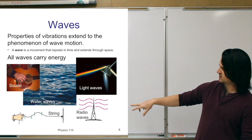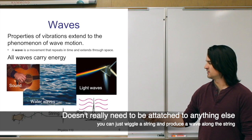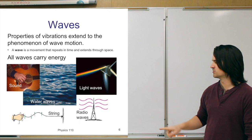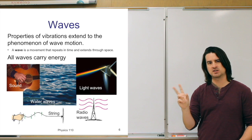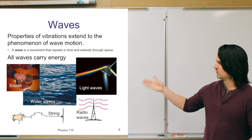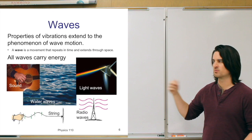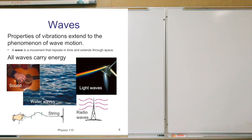You can produce a wave by attaching a string to a wall and wiggling the free end up and down — that oscillation your hand makes produces a wave that travels along the string. It turns out there are two basic kinds of waves, and the difference is whether the material the wave travels through is moving in the direction the wave travels, or perpendicular to the direction the wave travels.